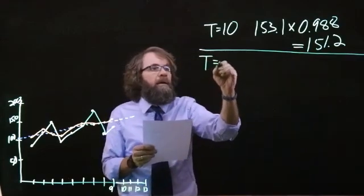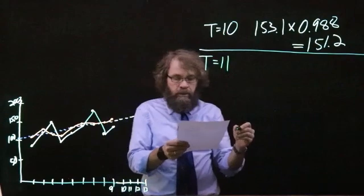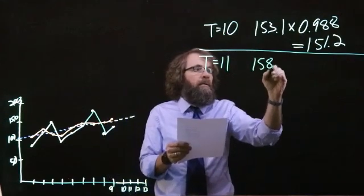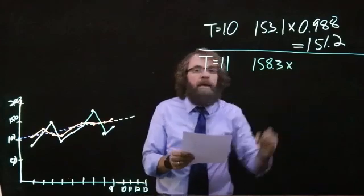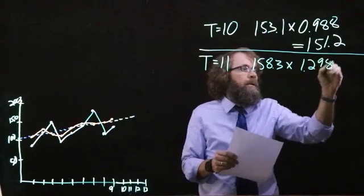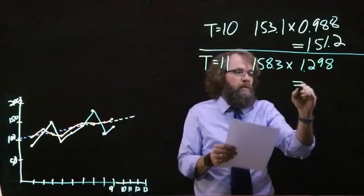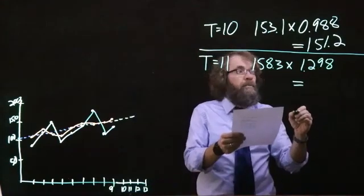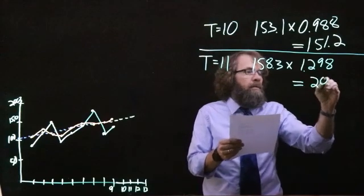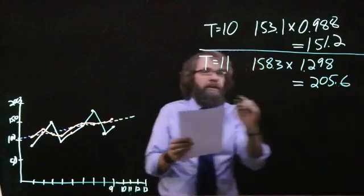For period 11, we got a straight line forecast of 158.3, and the seasonal index for the third quarter is 1.298, so we get a seasonalized forecast of 205.6.